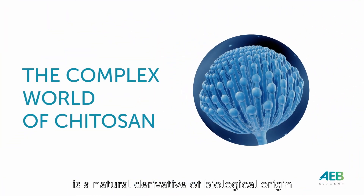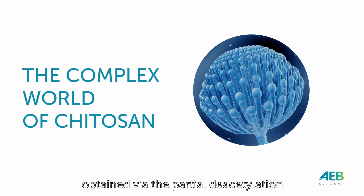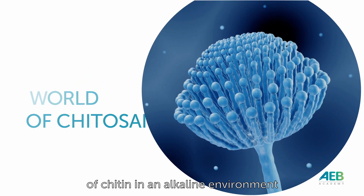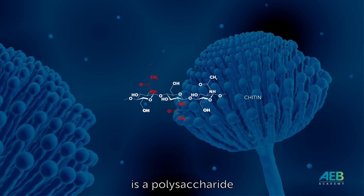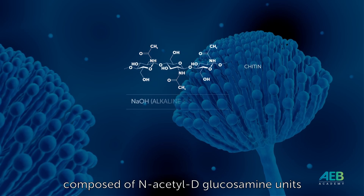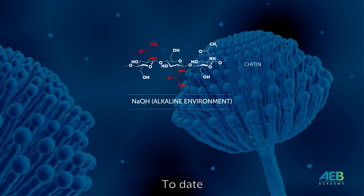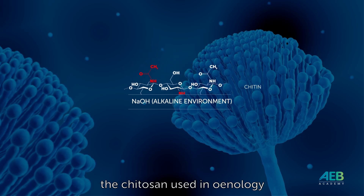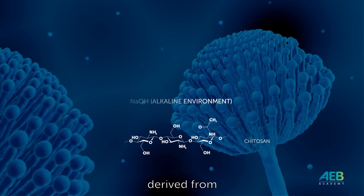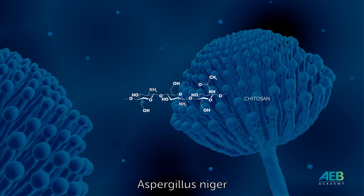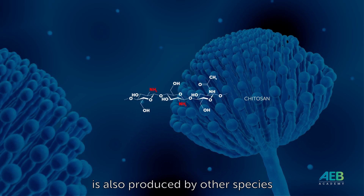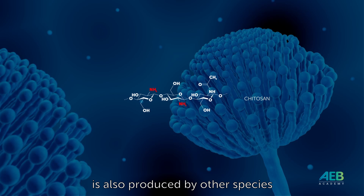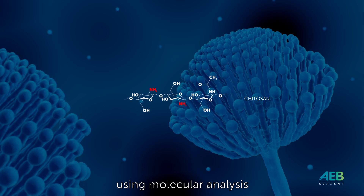Chitosan is a natural derivative of biological origin obtained via the partial deacetylation of chitin in an alkaline environment. Chitin is a polysaccharide composed of N-acetyl-D-glucosamine units. The chitosan used in oenology must be of fungal origin, derived from Aspergillus niger. It is important to understand that chitosan is also produced by other species, which can be easily identified using molecular analysis.